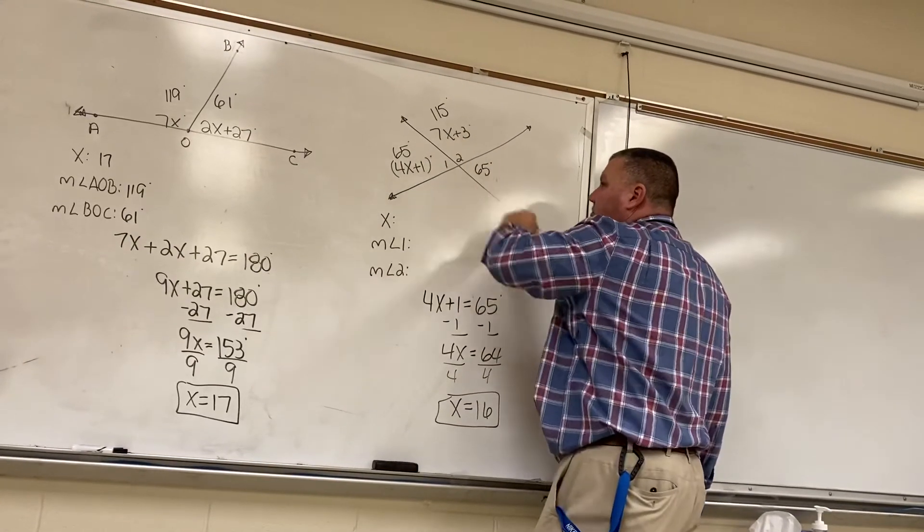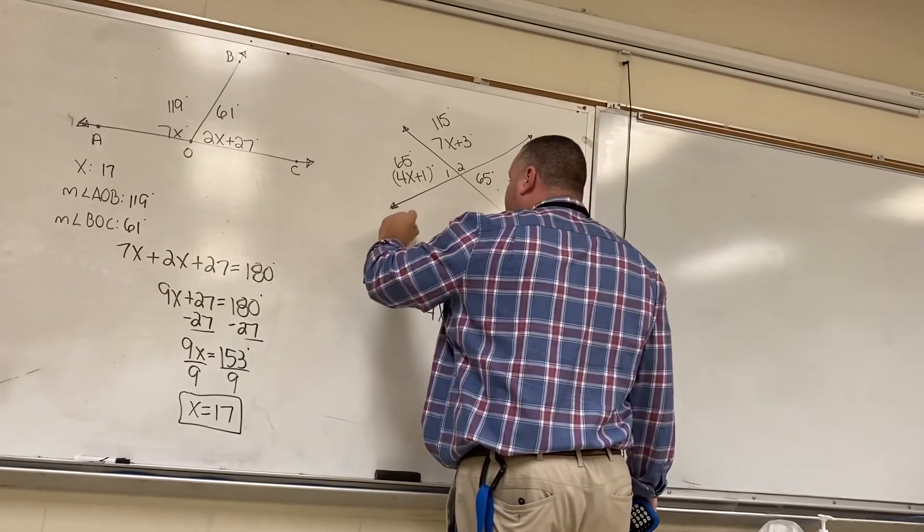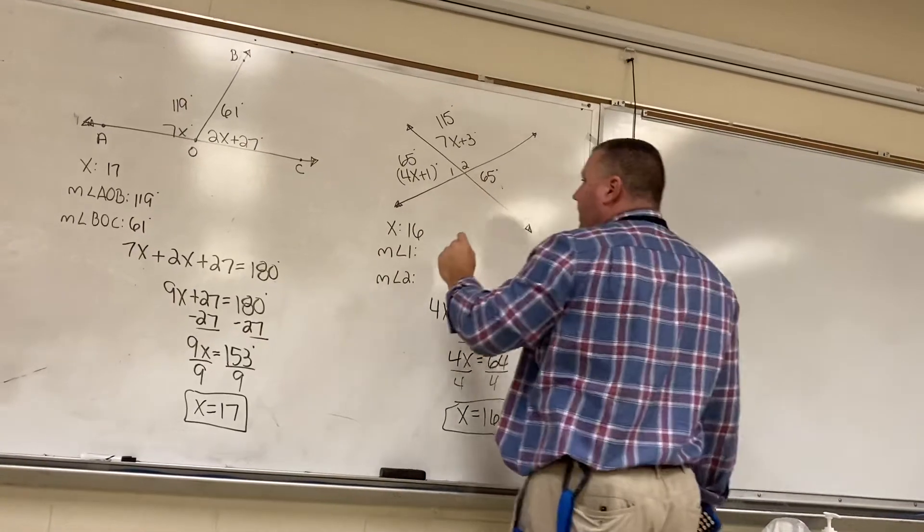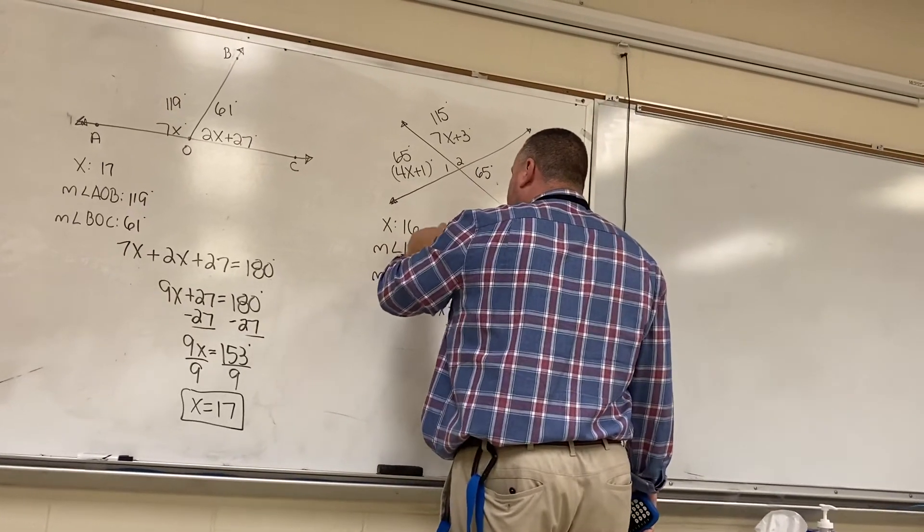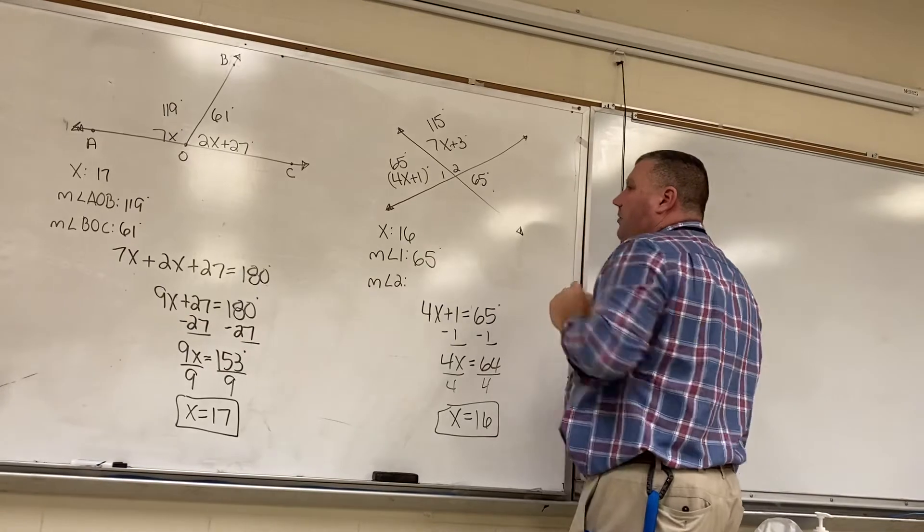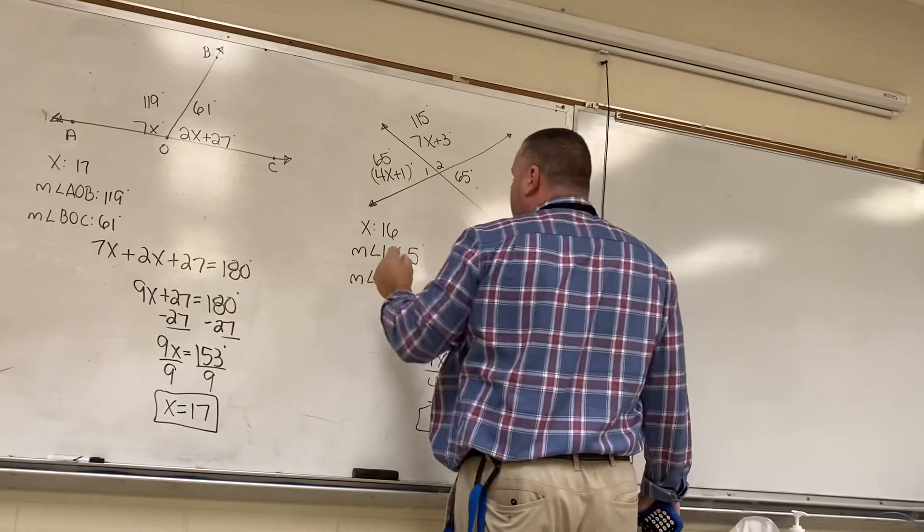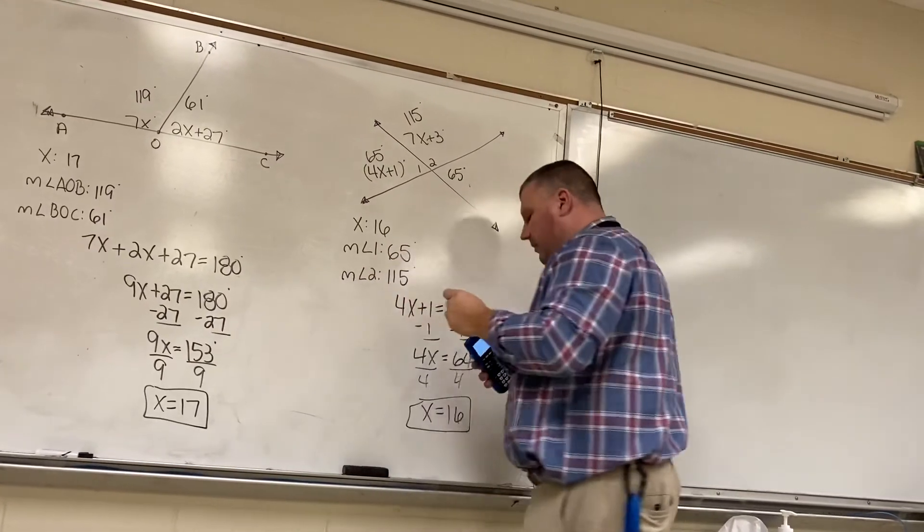It proves that this is a straight line. So, we can now write in that x is equal to 16. The measurement of angle 1 is 65 degrees because it is vertical with this angle over here. And we're looking for the measurement of angle 2 which we prove to be 115 degrees.